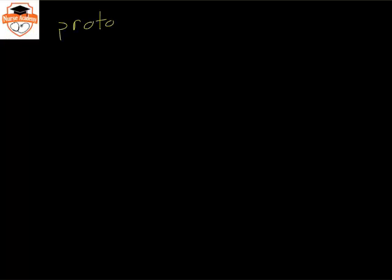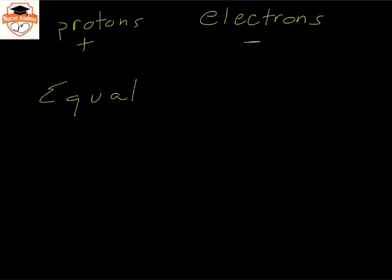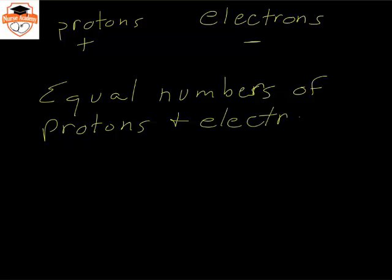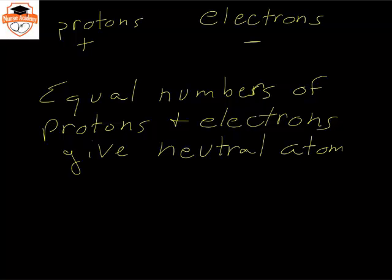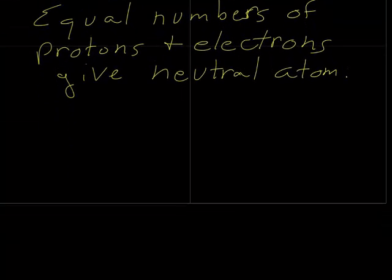We've discussed how atoms have protons which are positive and electrons which are negative. When we have equal numbers of protons and electrons, we have a neutral atom.